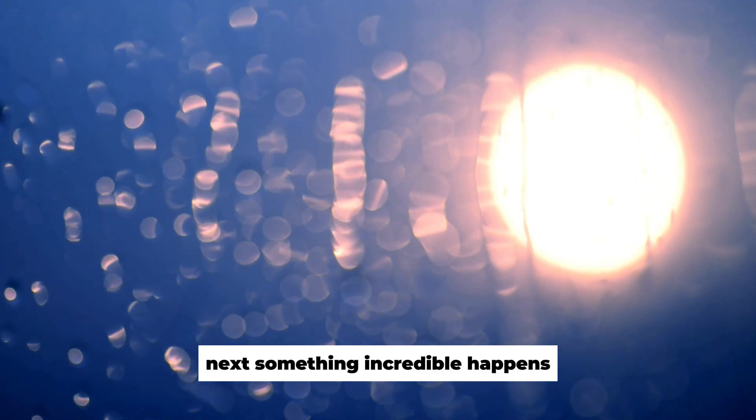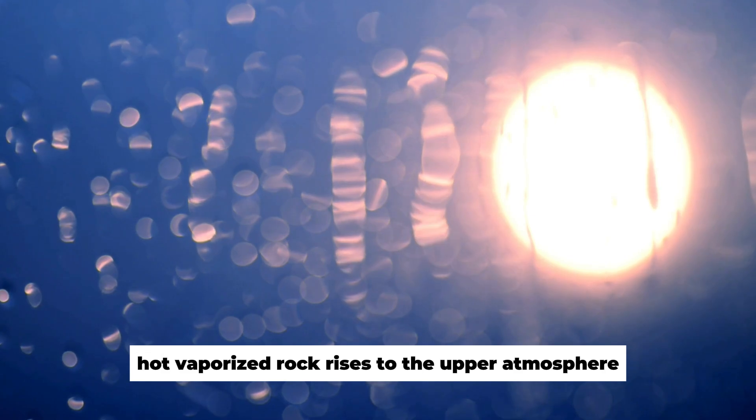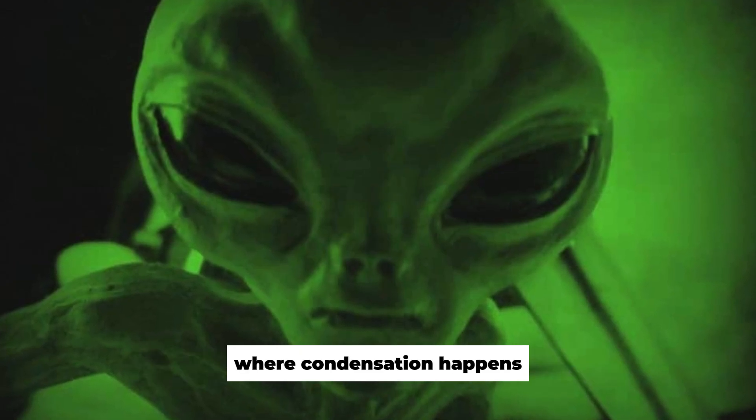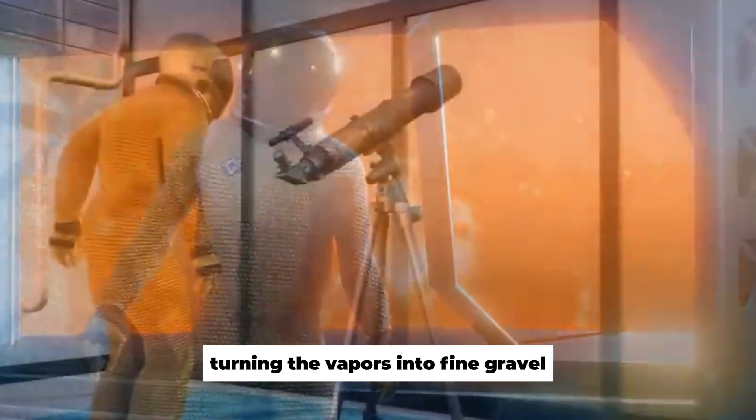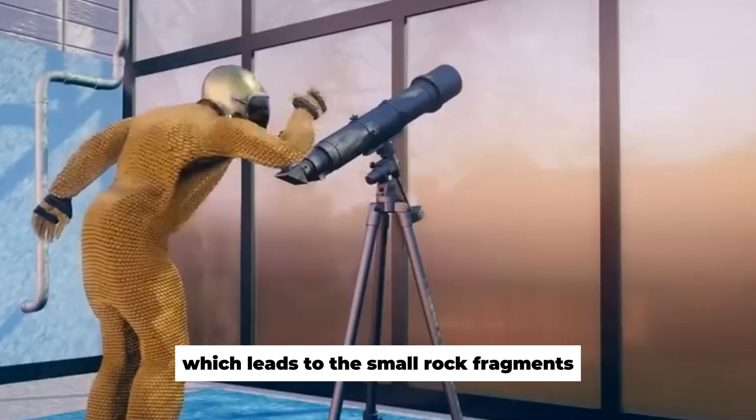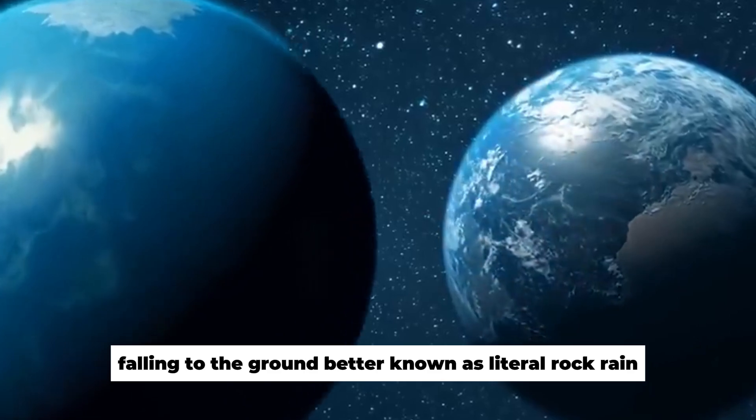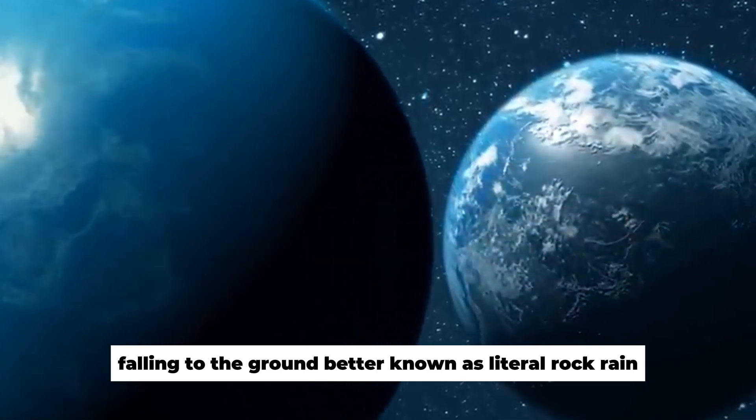Next, something incredible happens. Hot vaporized rock rises to the upper atmosphere, where condensation happens, turning the vapors into fine gravel during the colder front passing, which leads to the small rock fragments falling to the ground, better known as literal rock rain.